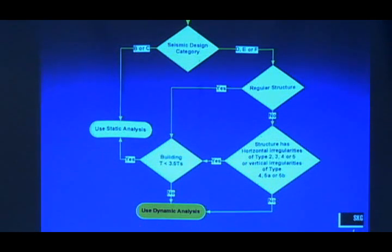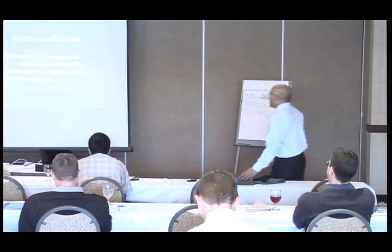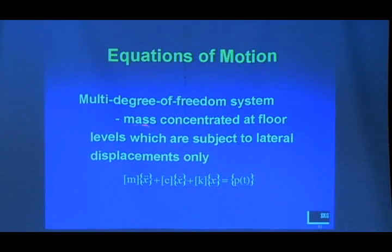This is the basic equation of motion of a multi-degree of freedom system: mass times acceleration plus damping times velocity plus stiffness times displacement equals the exciting force. Mass is not a scalar, it is a mass matrix. The acceleration is an acceleration vector because we have multiple degrees of freedom. Similarly, damping is a matrix with a velocity vector, and stiffness is a matrix times a displacement vector. This is a vector of the exciting forces.